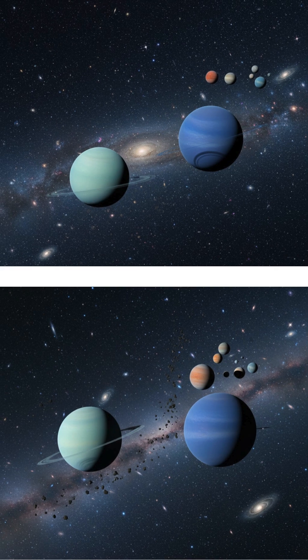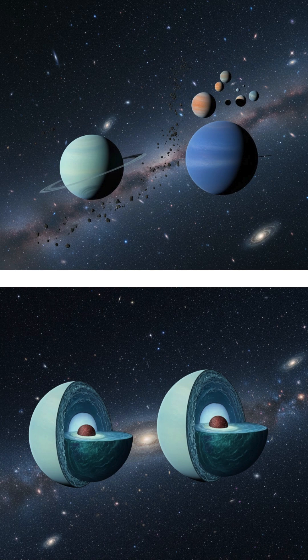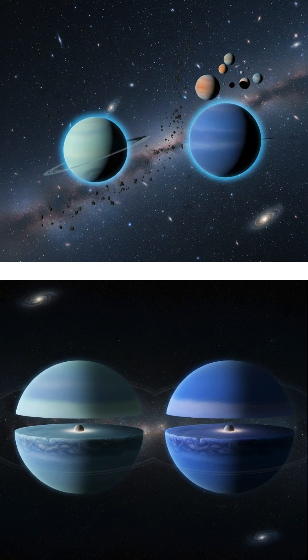Further out are the two ice giants, Uranus and Neptune. They are composed largely of ices such as water, ammonia, and methane, which give them their distinct blue-green hues. They have thinner outer layers of hydrogen and helium compared to the gas giants.